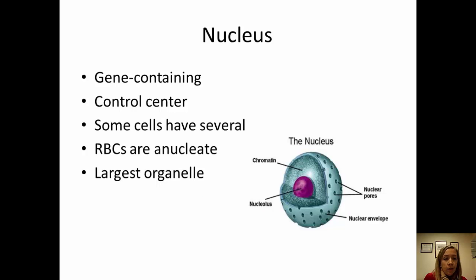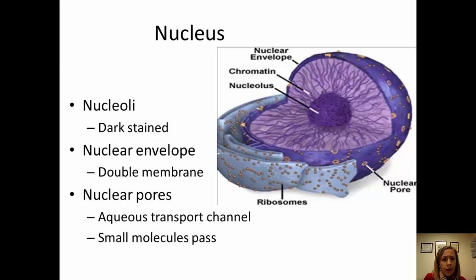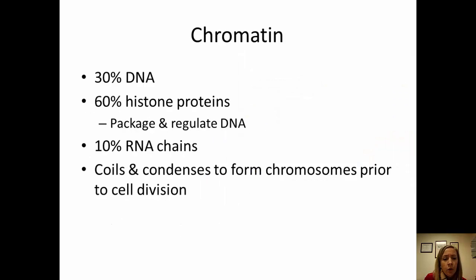The nucleus we've talked about. Interestingly, some cells do not have a nucleus — red blood cells, for example, lose their nucleus when they mature. But some cells have many nuclei. The nucleus is the largest organelle and contains chromatin, which condenses to form chromosomes when a cell divides through mitosis. Chromatin is about one-third DNA and about two-thirds proteins.